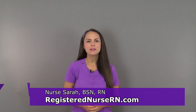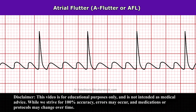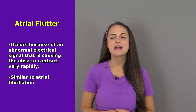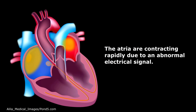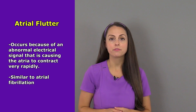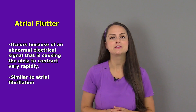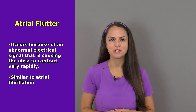As a nurse, you want to be familiar with different types of rhythms, and in this review I'm going to be going over atrial flutter. Atrial flutter, also referred to as aflutter, occurs because there is an abnormal electrical signal causing the atria to contract very rapidly. Atrial flutter is similar to atrial fibrillation that we talked about in the previous review, but there are some differences you want to be familiar with.